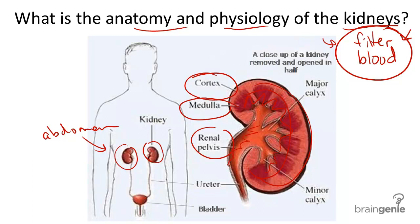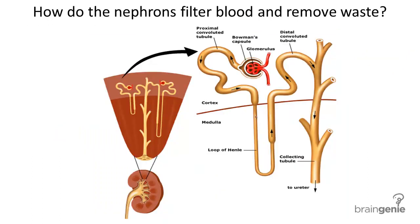You might recall that the adrenal glands in the endocrine system also have a cortex, or an exterior portion, and a medulla, or the interior portion. The kidneys also have these portions, and they have endocrine function. Going a bit smaller, inside the renal pelvis towards the center of the kidney is the major structure of the kidney, called a nephron.